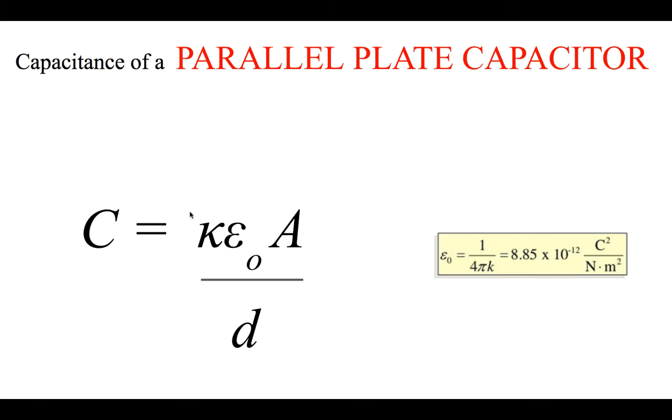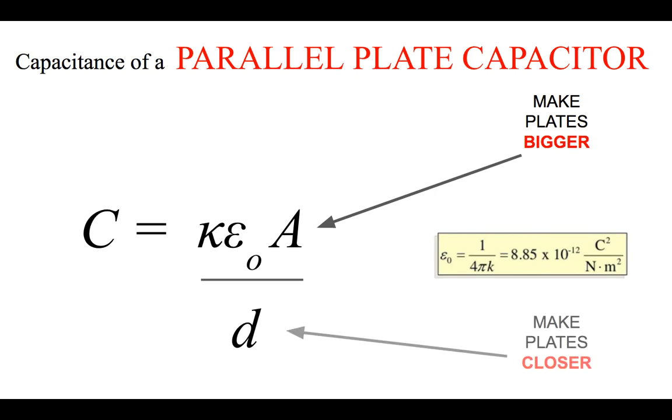If you have what's called a parallel plate capacitor—two parallel plates of metal that are separated—you have those three handles for maybe increasing or messing with the capacitance. You can make the plates bigger, increase the area of the plates. That makes the capacitance go up; you can see it's in the numerator here. If we make it closer together, that's reducing the spacing, called d. If you reduce d, if you make the plates closer, that reduces d, which makes the capacitance go up.